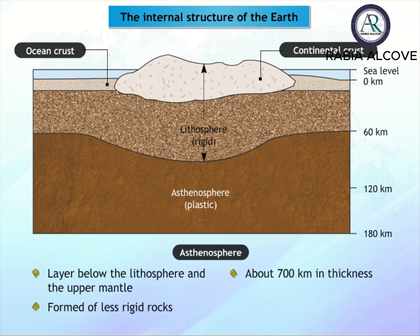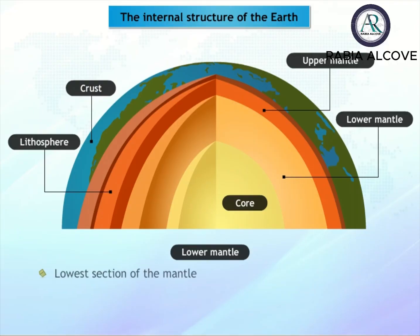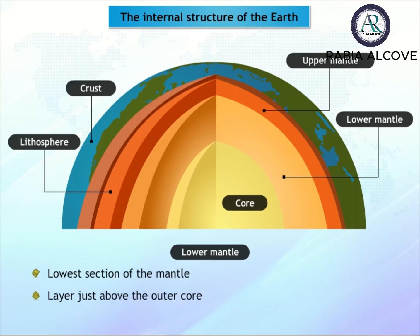The lowest section of the mantle is called the lower mantle, which is just above the outer core. It is composed of rocks similar to the asthenosphere, but more rigid. It is about 2,890 kilometers in thickness.